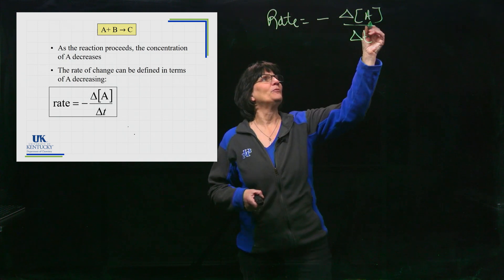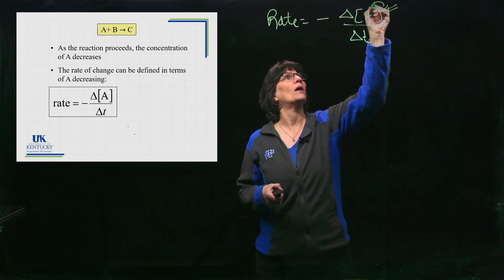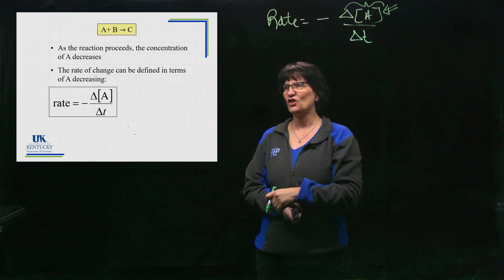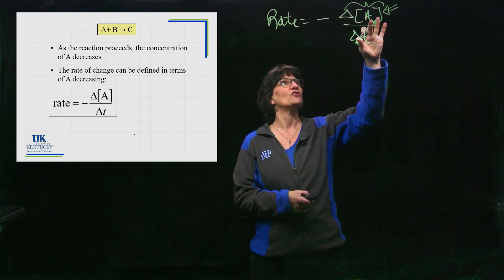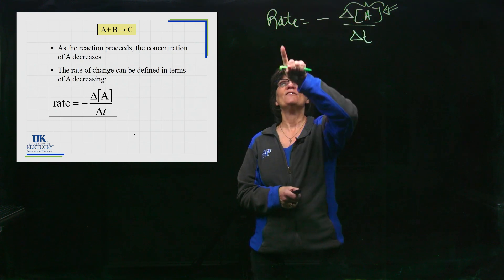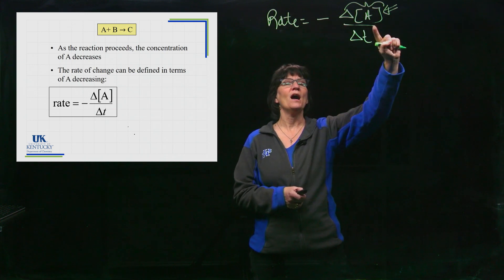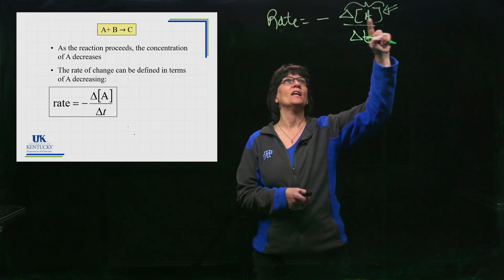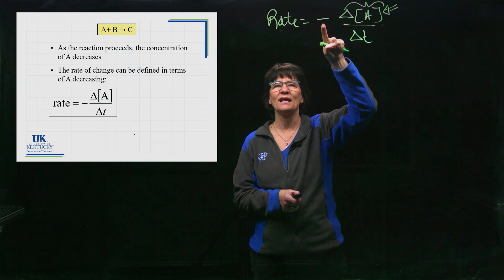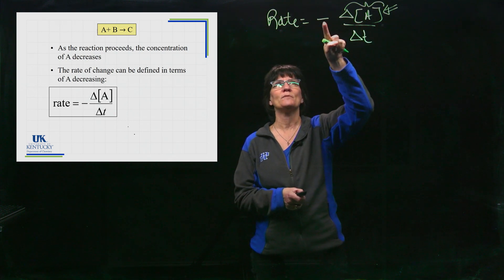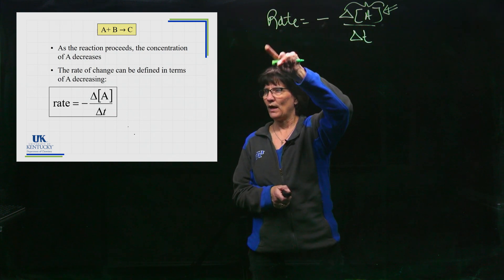Okay, this part right here, just this part right here, is negative. The change in concentration of A is negative. If I want the rate of the reaction to be defined by how A is changing, I'm going to need to put a minus sign in there because a negative value times a negative value will make my rate positive.